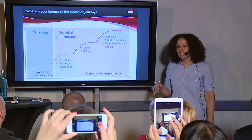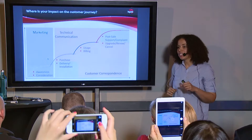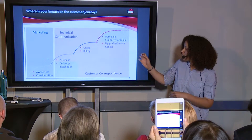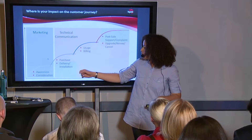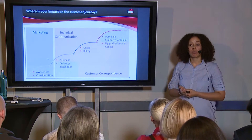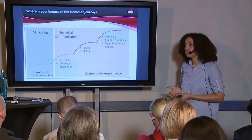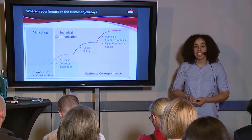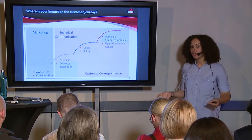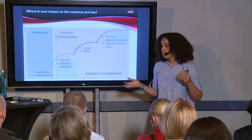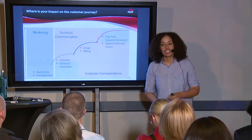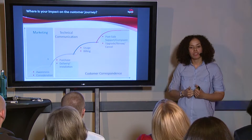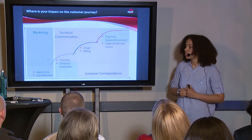We looked at the examples a few minutes ago, and maybe you're having a hard time fitting that into here. For purchase, we could have a contract — it could be a one-page mobile phone contract, a three-page car rental contract, or a 300-page contract between B2B partners. For delivery and installation, we had that email that was a welcome letter informing the customer that their services will be ready to use on such and such date.